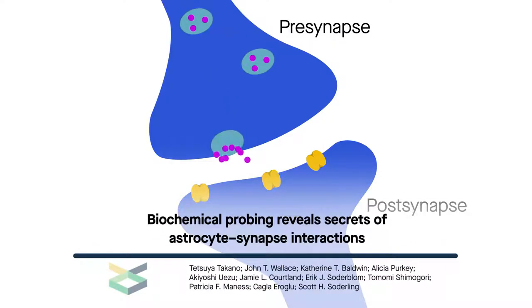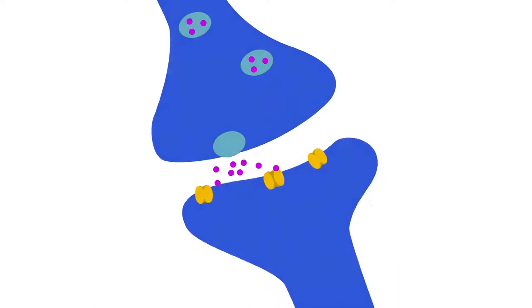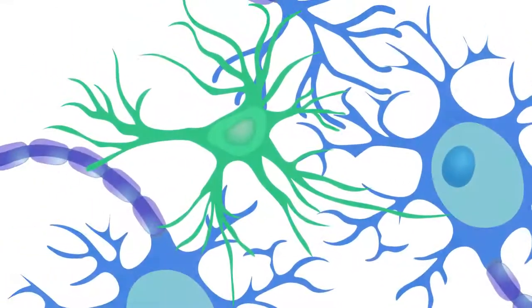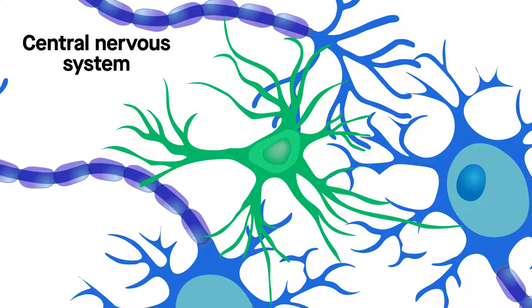Synapses are the biochemical switchboards in our bodies that make perception of the external world possible. Over the past few decades, research has shown that throughout the central nervous system, synapse formation and function is closely regulated by astrocytes.